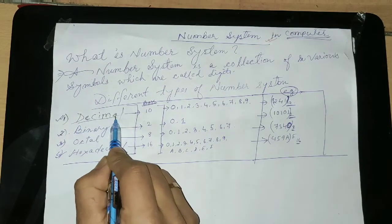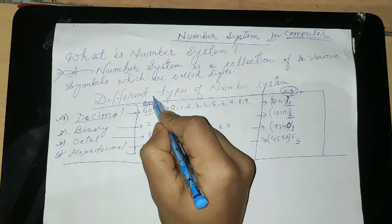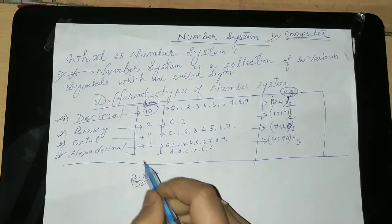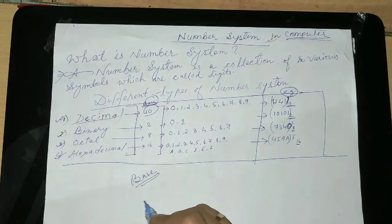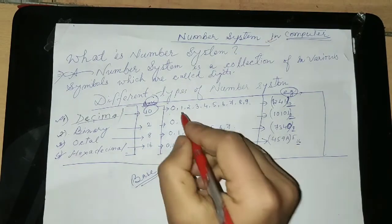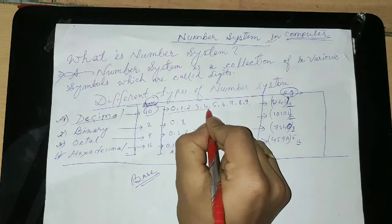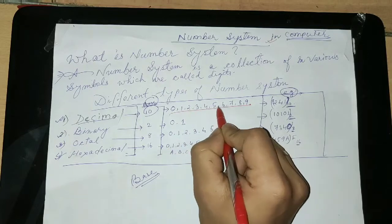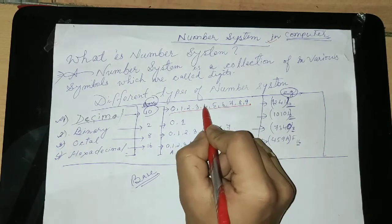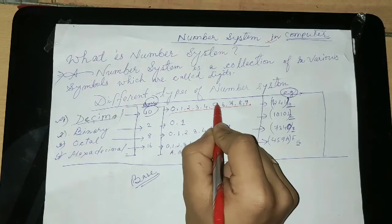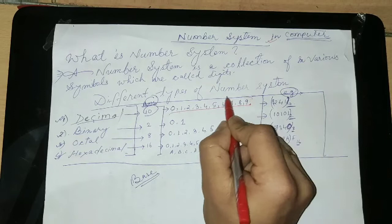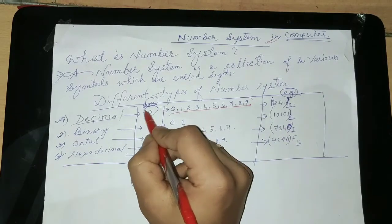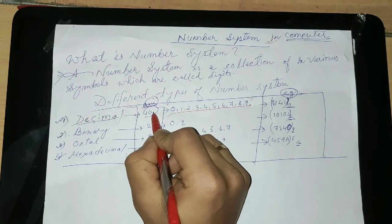What is decimal number system? At first, you see, I wrote here base. This decimal number system has 10 base. That means the decimal number system digits are 0, 1, 2, 3, 4, 5, 6, 7, 8 and 9. There are in total 10 digits. These all the digits together are known as base. So this decimal number system has 10 base.